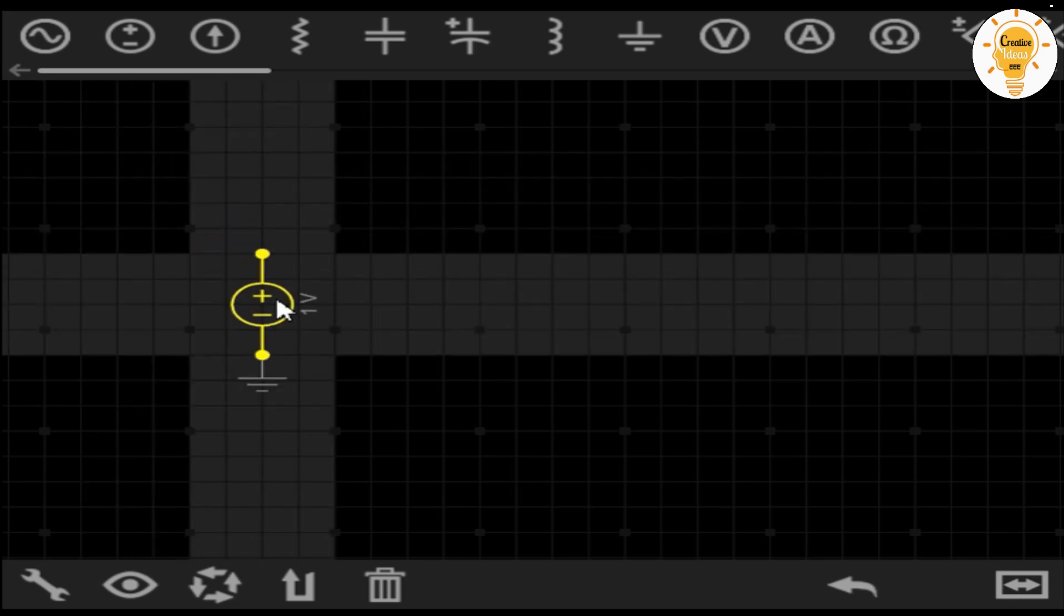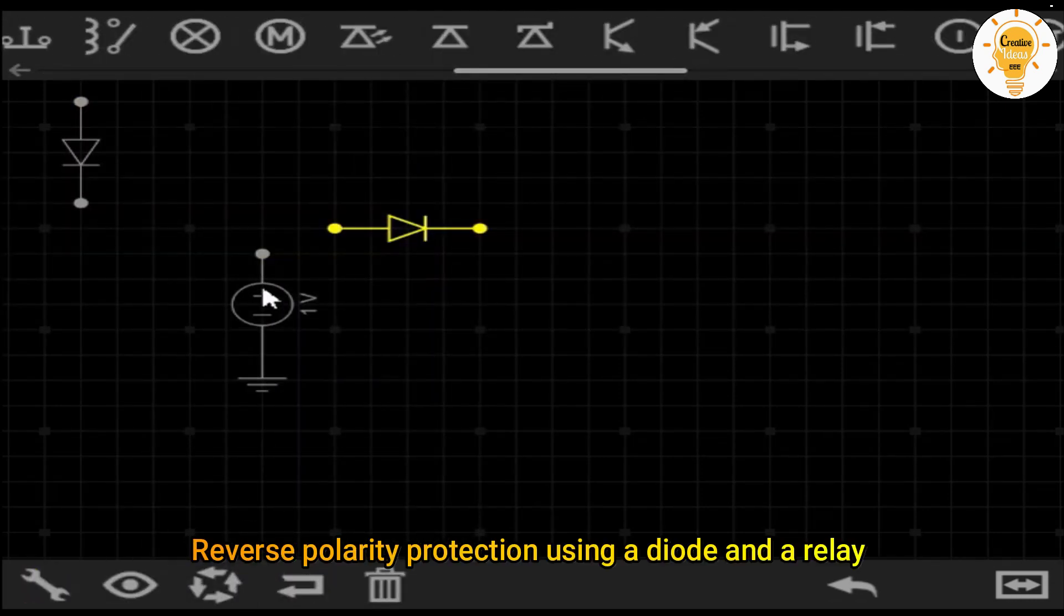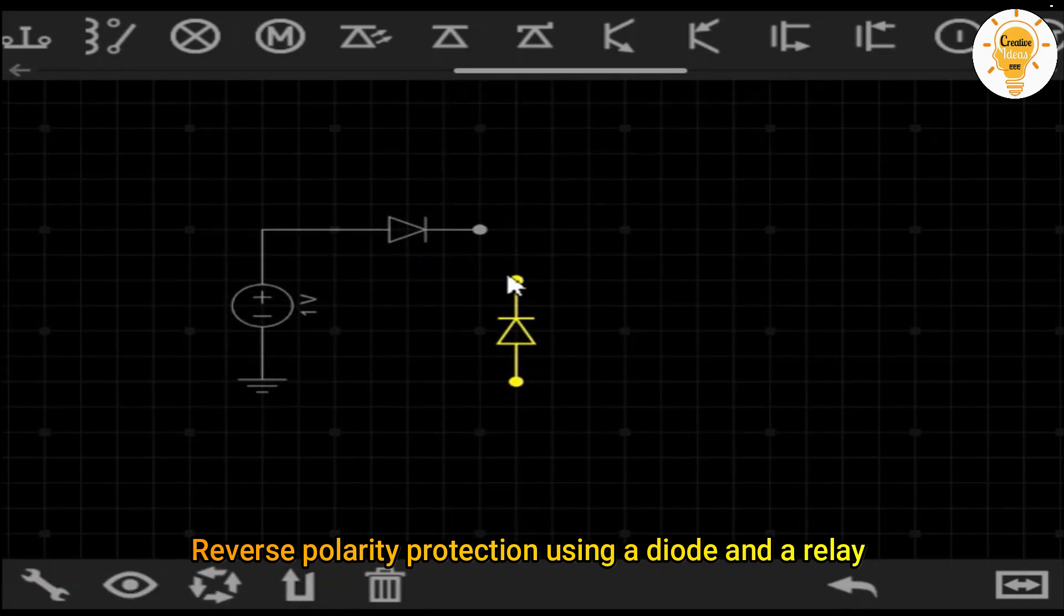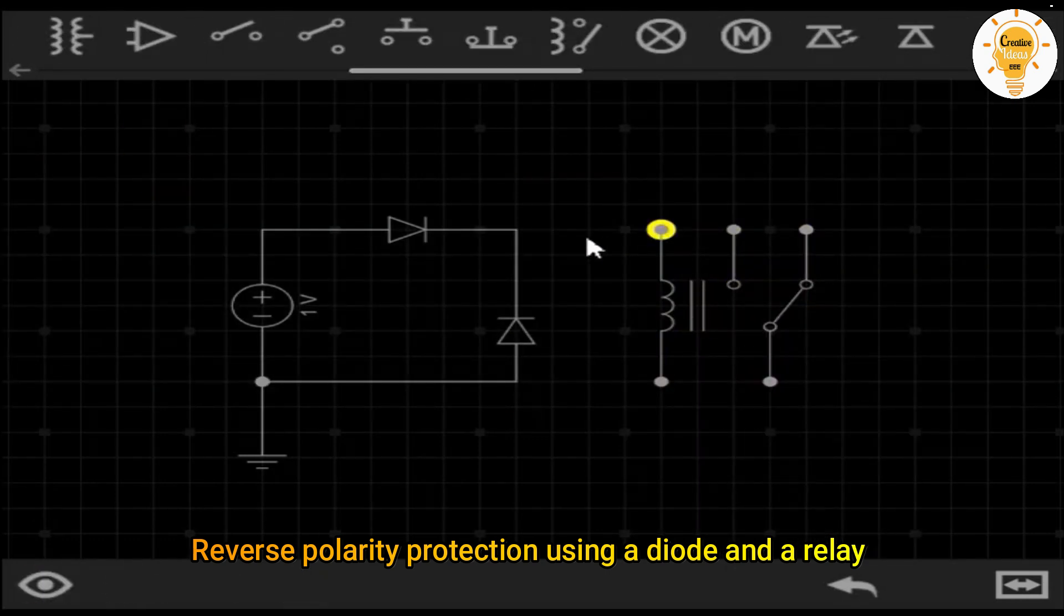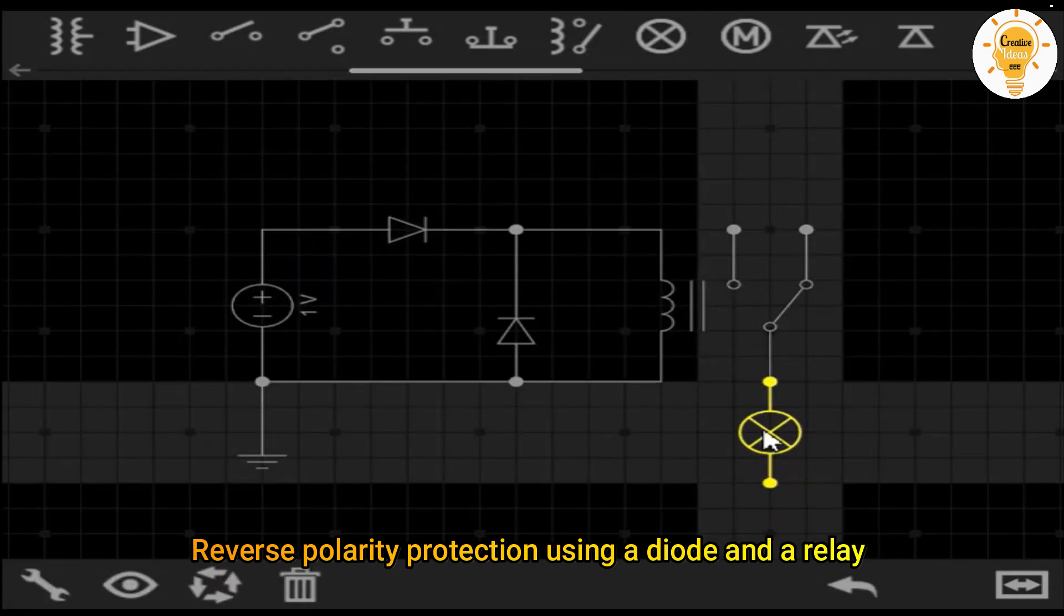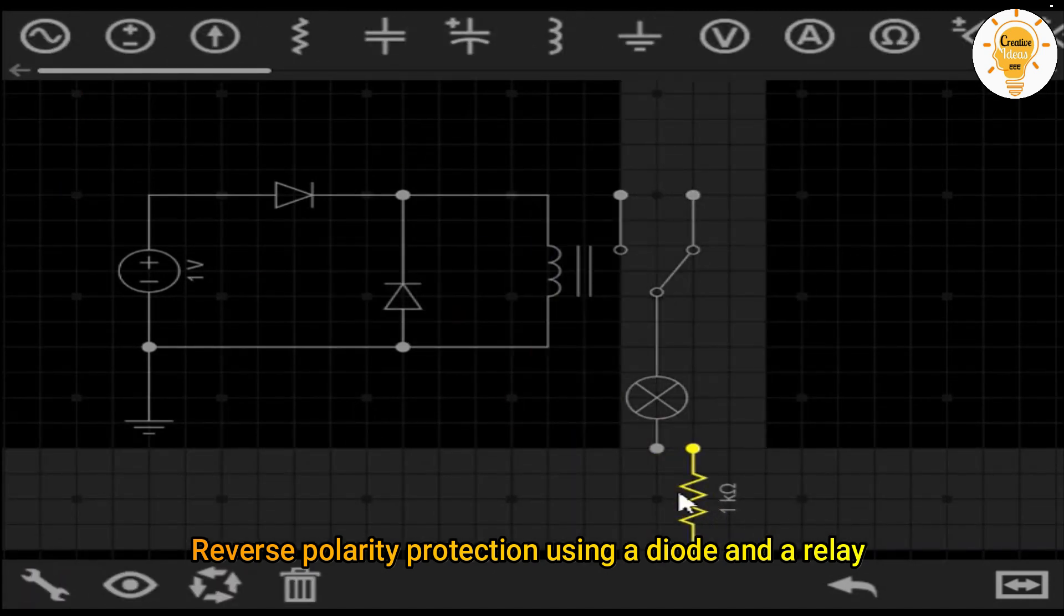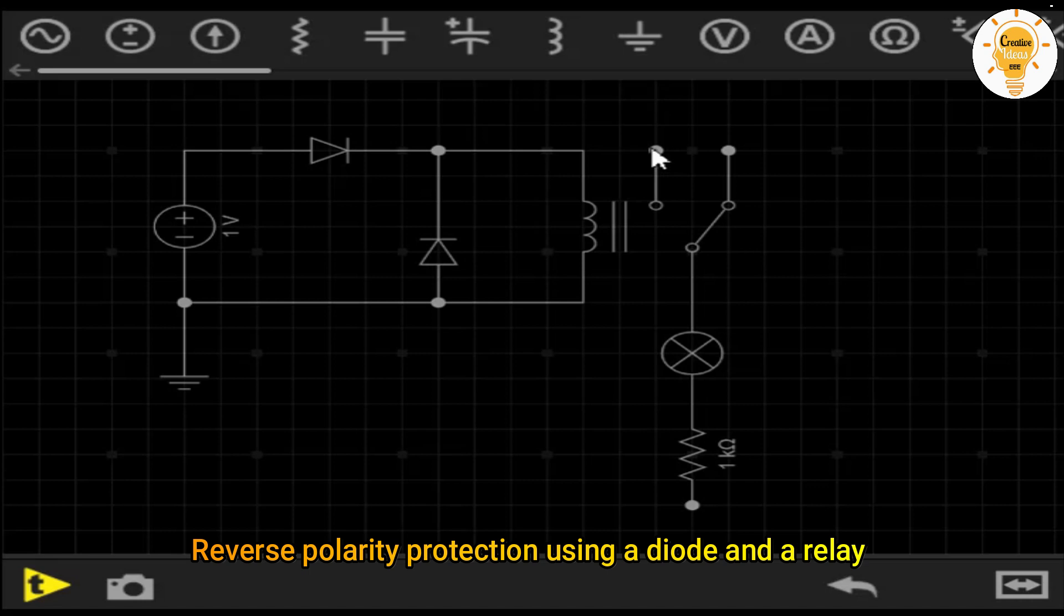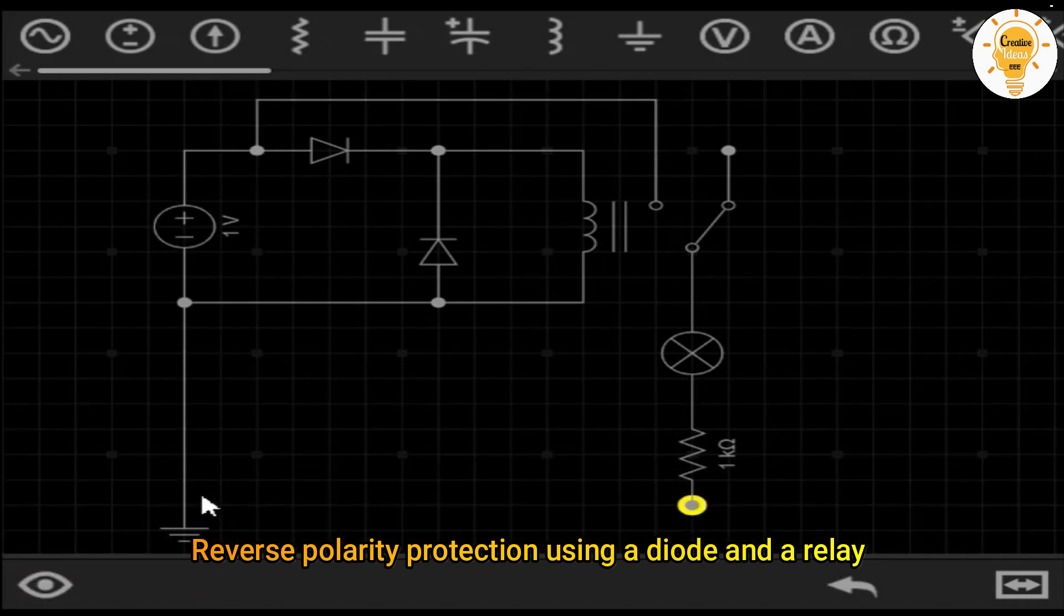Reverse polarity protection using a diode and a relay. This circuit uses reverse polarity protection using a diode in direct bias. The difference is that we will add a relay to avoid the voltage drop of the diode. By avoiding this drop, we will ensure that all the supplied voltage reaches our circuit. In addition, the diode will not dissipate as much heat having to deal only with the relay load.